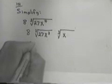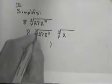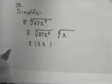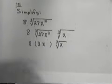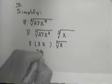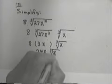So I have 8 times the cube root of 27 is 3. The cube root of x cubed is x times the cube root of x, which gives me 24x times the cube root of x.